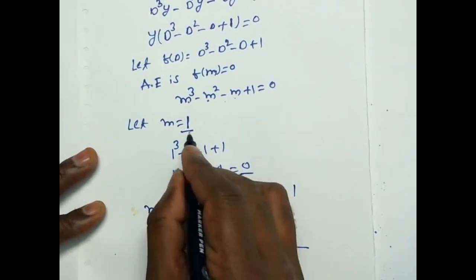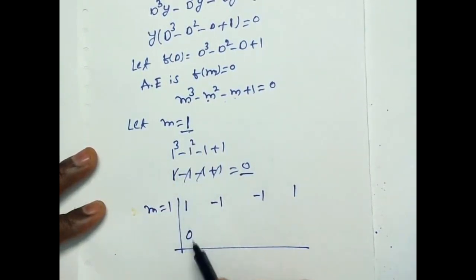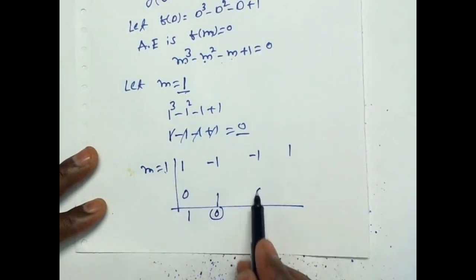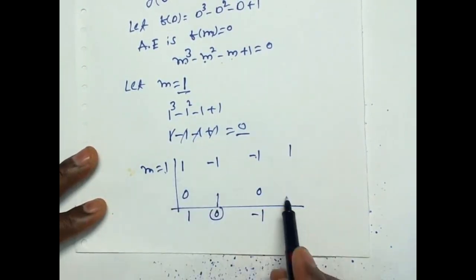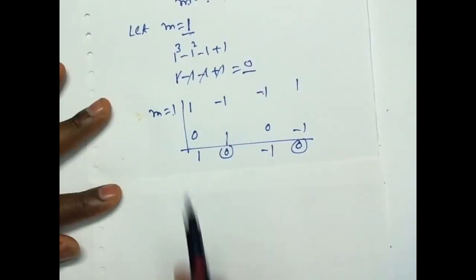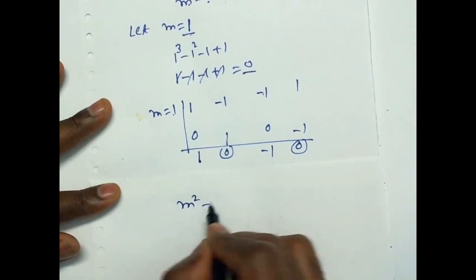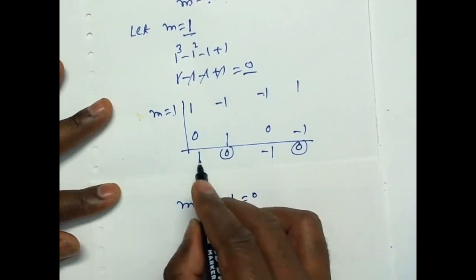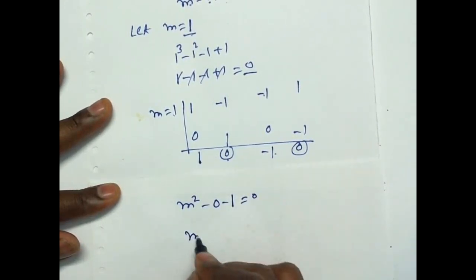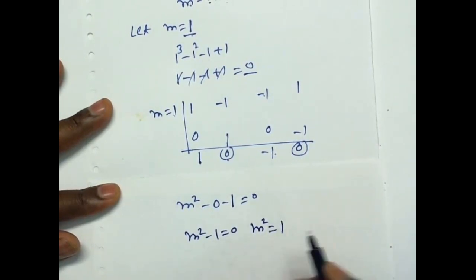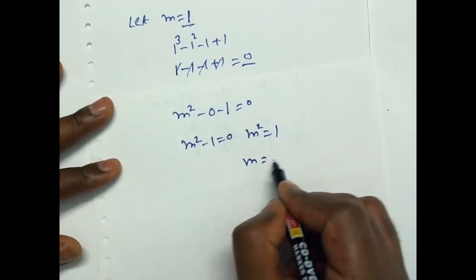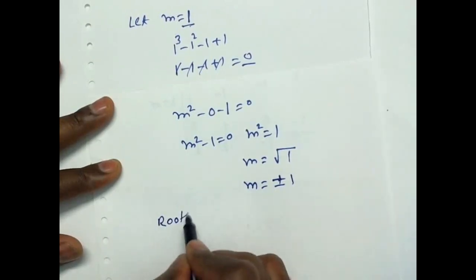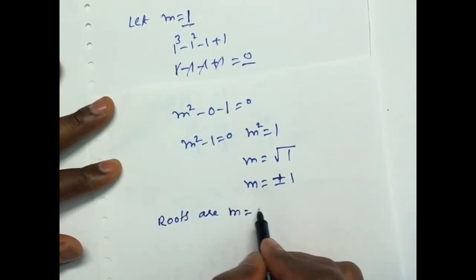Since M equals 1 is a root, we factor out (M minus 1) to get the remaining factor. This gives M² minus 1 equals 0, so M² equals 1, meaning M equals plus or minus 1. Therefore the roots are M equals minus 1 and M equals 1.